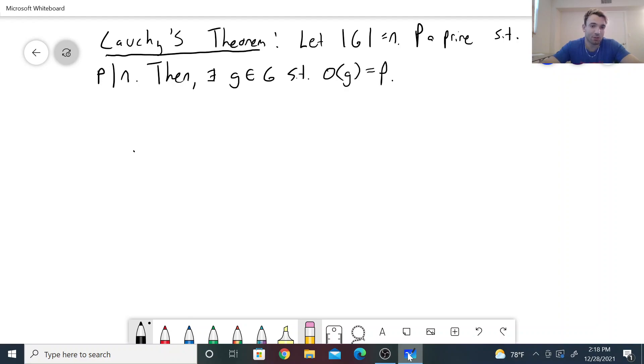There's a few different proofs of Cauchy's theorem. One splits first the case where g is an abelian group and uses induction on the size of g to show the claim for the abelian case, and then uses the class equation to deduce it for any arbitrary finite group. The proof we'll be going over today uses, in my opinion, a more elegant approach which uses group actions. So let's start.